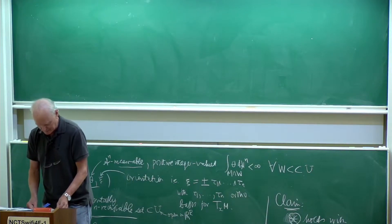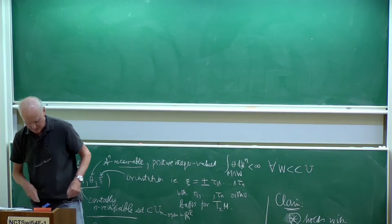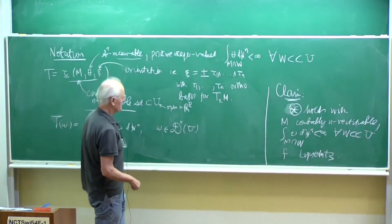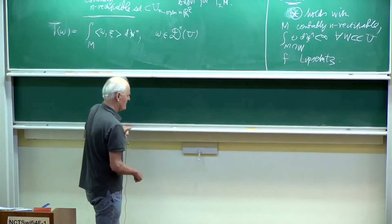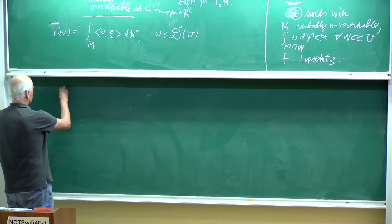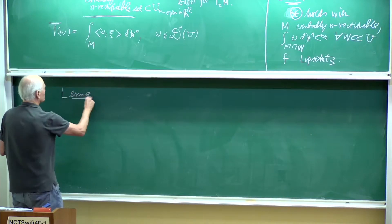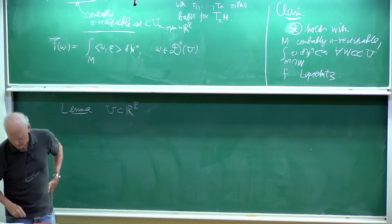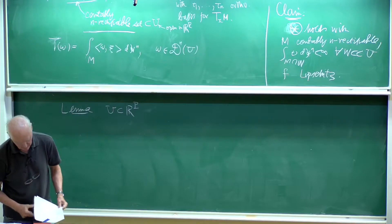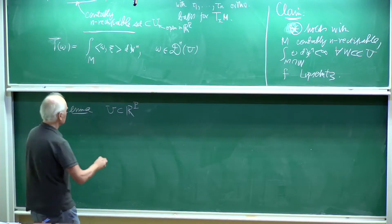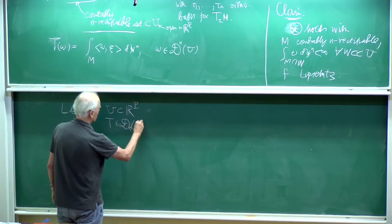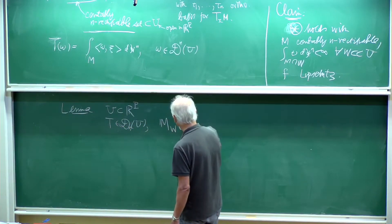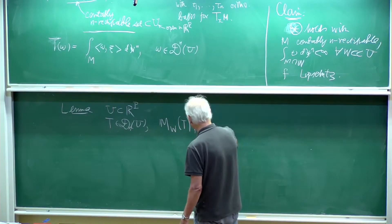Now we're going to give the main step in the proof of the compactness theorem today. There are two preliminary lemmas we need. So a first lemma — I think I mentioned this one before: U is open in R^p, p ≥ n, and we assume we've got a current T in the space of n-currents on U. That just means it's a general n-current. We assume it's got finite mass locally, and also that the boundary has got finite mass locally.